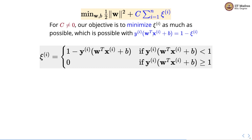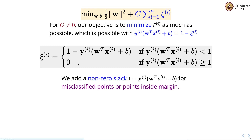By performing simple algebraic manipulation, we see that xi_i equals 1 minus yi times (w transpose xi + b), whenever yi times (w transpose xi + b) is less than 1. This is clearly for the misclassified point. For each misclassified point we set xi_i to 1 minus yi times (w transpose xi + b), and for all correctly classified points xi_i equals 0. So we can add a non-zero slack for misclassified points or points inside the margin.